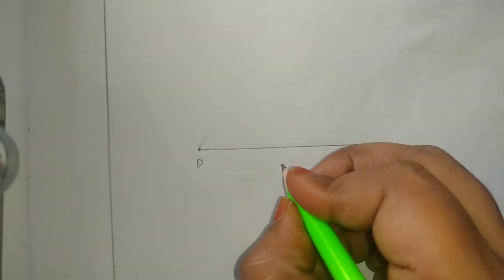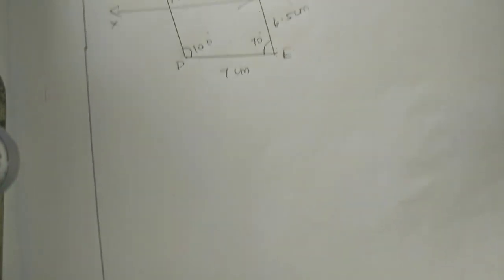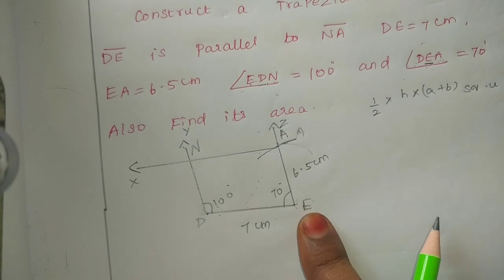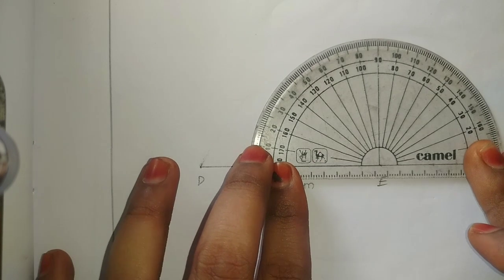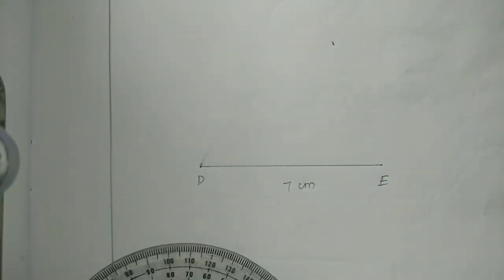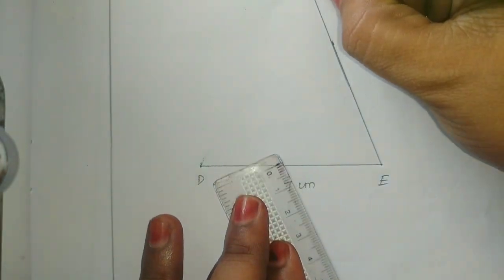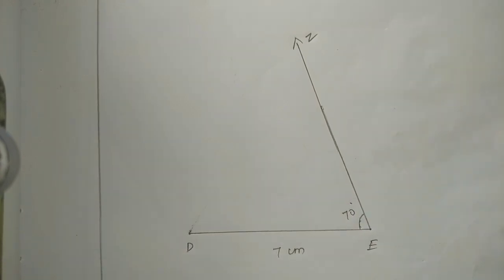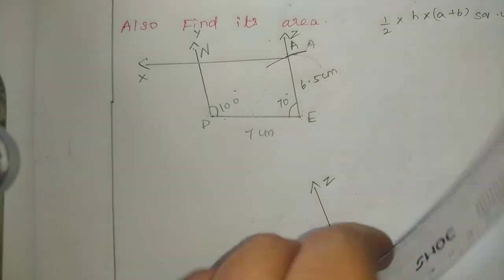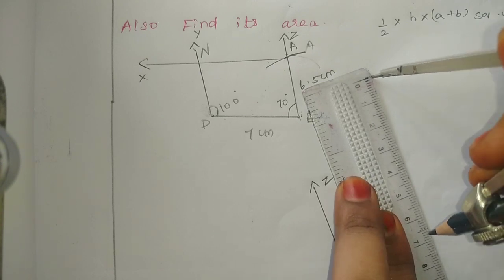D, E is 7 centimeters. Next, let us go to — not 90 degrees, it is 70 degrees. So D and E will pass through A and B. Correct, 70 degrees mark. So now we have this value and we measure 6.5. We use a scale and measure 6.5 here.